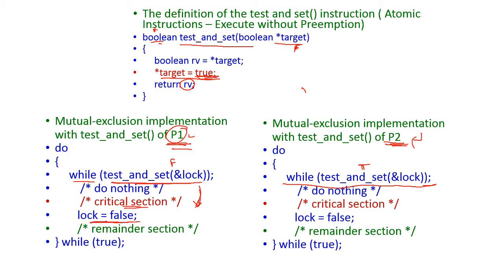Then process 1 will turn the lock to false. Once the lock is false, the target value becomes false, and the while loop condition becomes false. Then process 2 will come out from the while loop and execute the critical region. After completing, process 2 will also release the lock. This is how process 1 and process 2 share the common critical region using the test-and-set method.